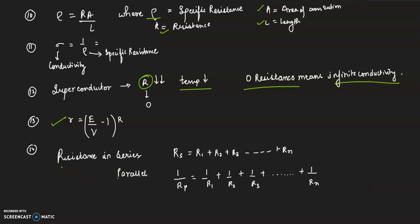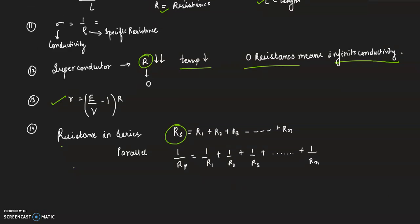Next is resistance in series and parallel. Questions and numericals are asked from this. For series, it is adding all the resistance, and for parallel it is 1 divided by R1 plus 1 divided by R2 plus so on. We will try a numerical here.